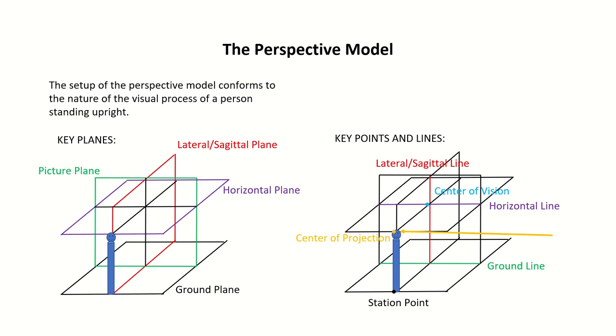The center of projection, which is the point inside the observer's head at the intersection of the lateral and horizontal planes, and the station point, which is the point directly below the center of projection.